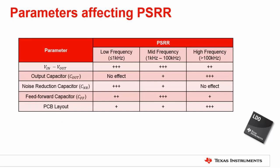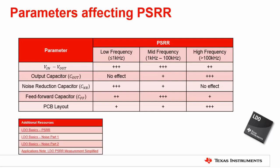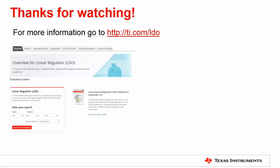Now we've seen that by adjusting the Vin-to-Vout delta and the output capacitance, we can improve PSRR for a particular application. These are by no means the only variables affecting PSRR. The table shown outlines other various factors that come into play. For instance, changing the output capacitance will have little to no effect at lower frequencies but has an impact at higher frequencies. Whereas changing the noise reduction capacitor will have no effect on higher frequencies but will have a major impact on lower frequencies. To learn more about PSRR parameters such as feed-forward capacitors or PCB layout, please refer to our additional resources, including blog posts and application notes that go into more detail.